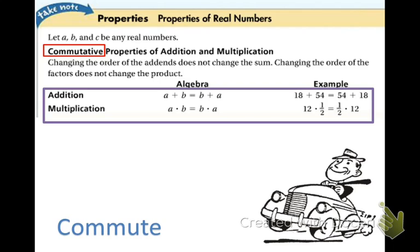The first property that we're going to take a look at is the commutative property of addition and multiplication. What this says is you can change the order of what you're adding or multiplying and you'll still get the same result. So you want to make sure you fill in the box right here.